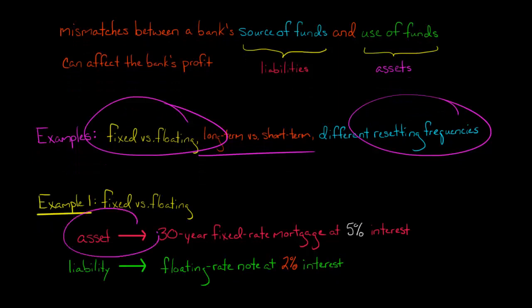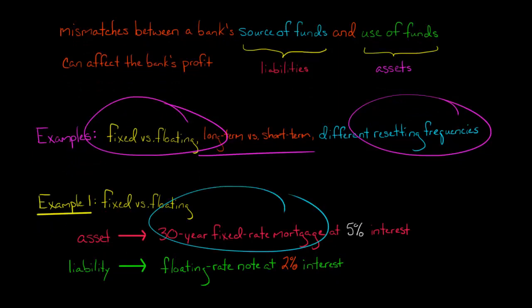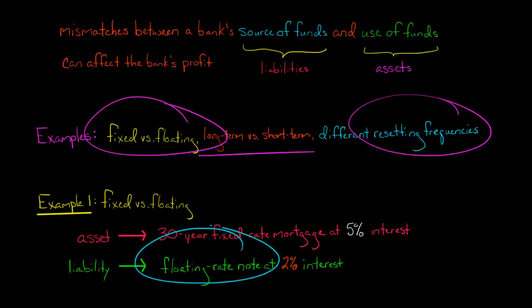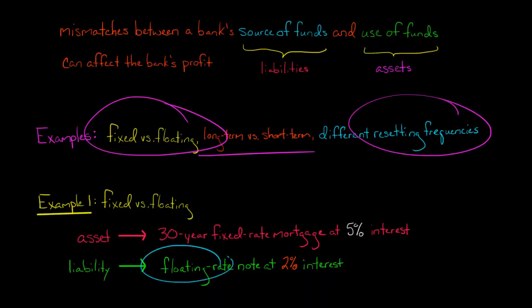Let's say the bank has a single asset: a 30-year fixed rate mortgage at 5% interest that they are receiving from borrowers. In terms of liability — the source of the funds — the bank has funded those assets with a floating rate note at 2%. It's floating rate, so that's going to adjust periodically at the reset date. Right now, the bank has a net interest margin of 3%.